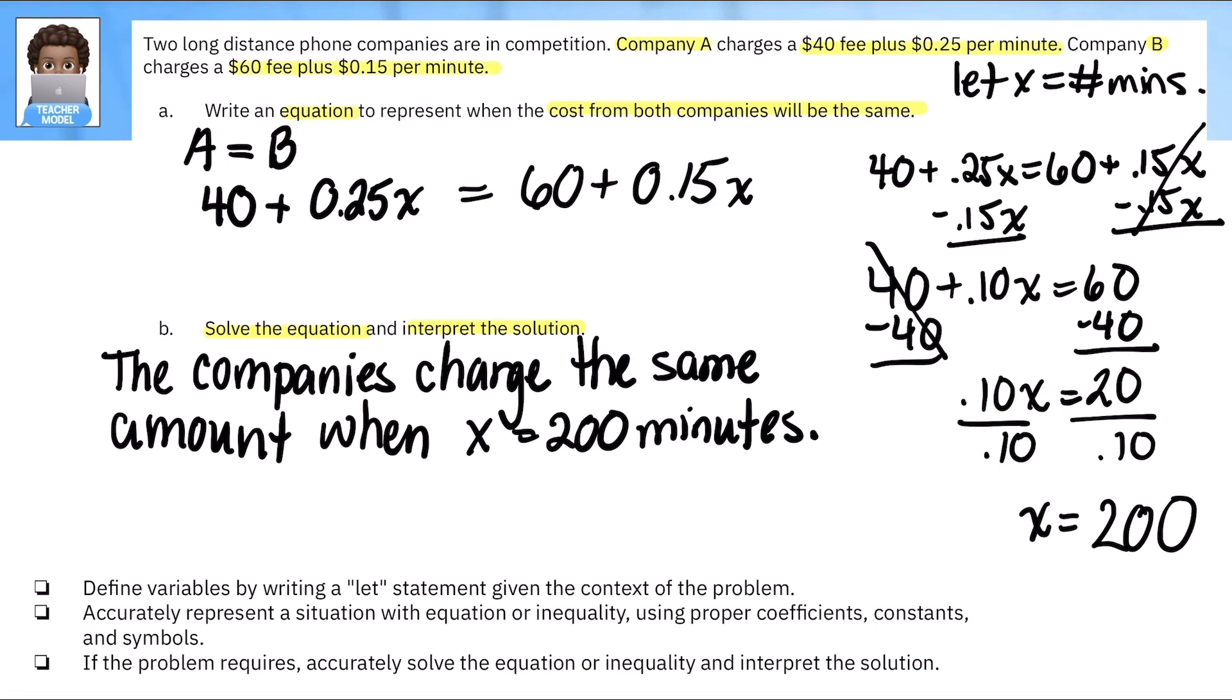Okay. So I've just interpreted what that actually means in the context of this problem. So when someone has used their phone for 200 minutes, they are both being charged the exact same amount. All right. So let's just look at what we already have here. I've created a let statement. I know that X is equal, let X be equal to something. I've represented both problems in this case with equations with the proper coefficients. In this case, my coefficient was the charge per minute. Those were my coefficients: 25 cents per minute, 15 cents per minute. And this problem did require me to solve it and to interpret what the solution was.